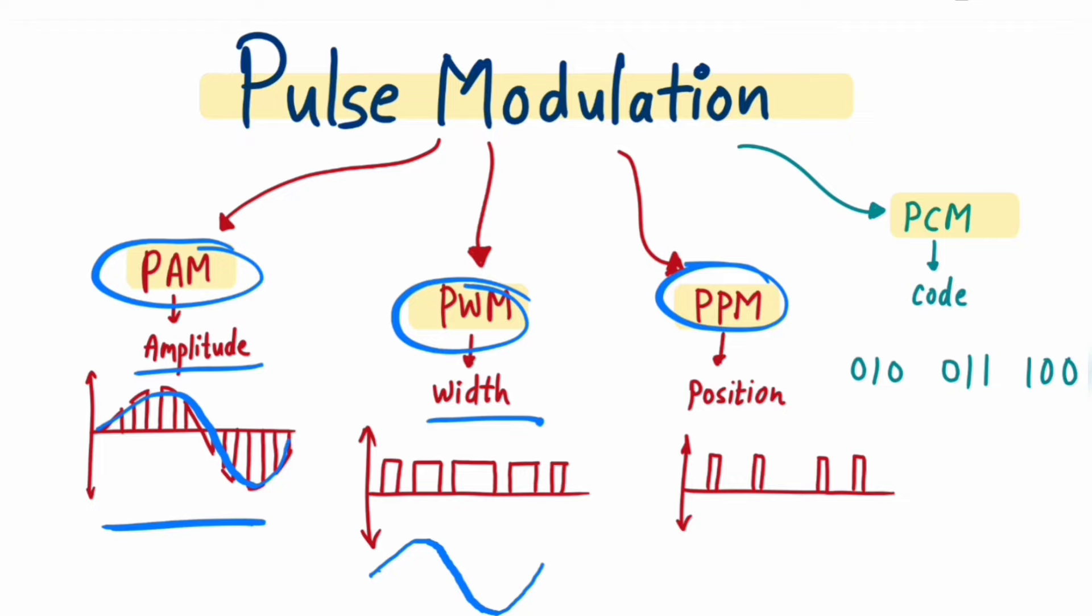The fourth type is PCM. This is Digital. The previous ones are Analog Pulse Modulation. PCM comes under Digital Pulse Modulation. According to the modulating signal amplitude, there are code words that are transmitted. We will see PCM in detail in a separate video.